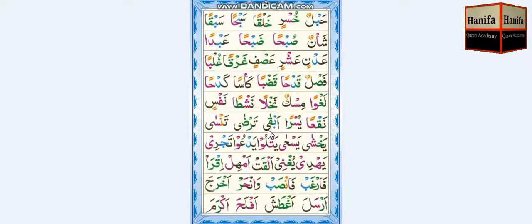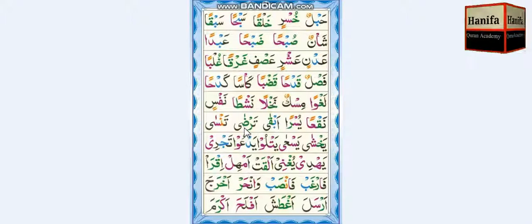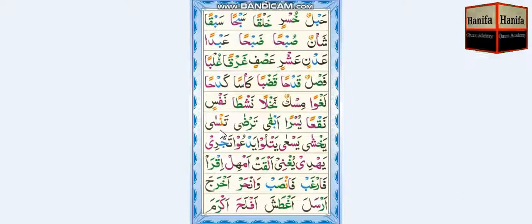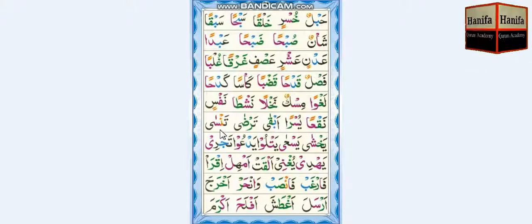Qa-ta. Ra, Fatha — tar. Dad, Qaima, Fatha — do. Tar-da. Tar-nun, Fatah — tan. Sin, Qaima, Fatha — sa. Tan-sa. Ya, Khaf, Fatah — ya.